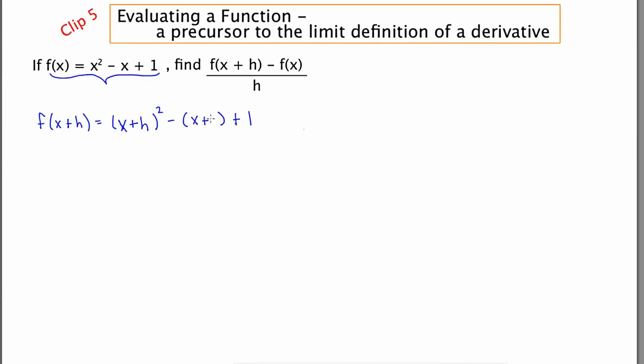Now this is going to require some additional expansion and foiling in particular. So this is going to be x squared plus 2xh plus h squared. And we're going to distribute the negative through minus x minus h plus 1. I'll do a quick peek and see if anything can be combined and I don't think it can. So this right here is our answer for the first part of the evaluation.